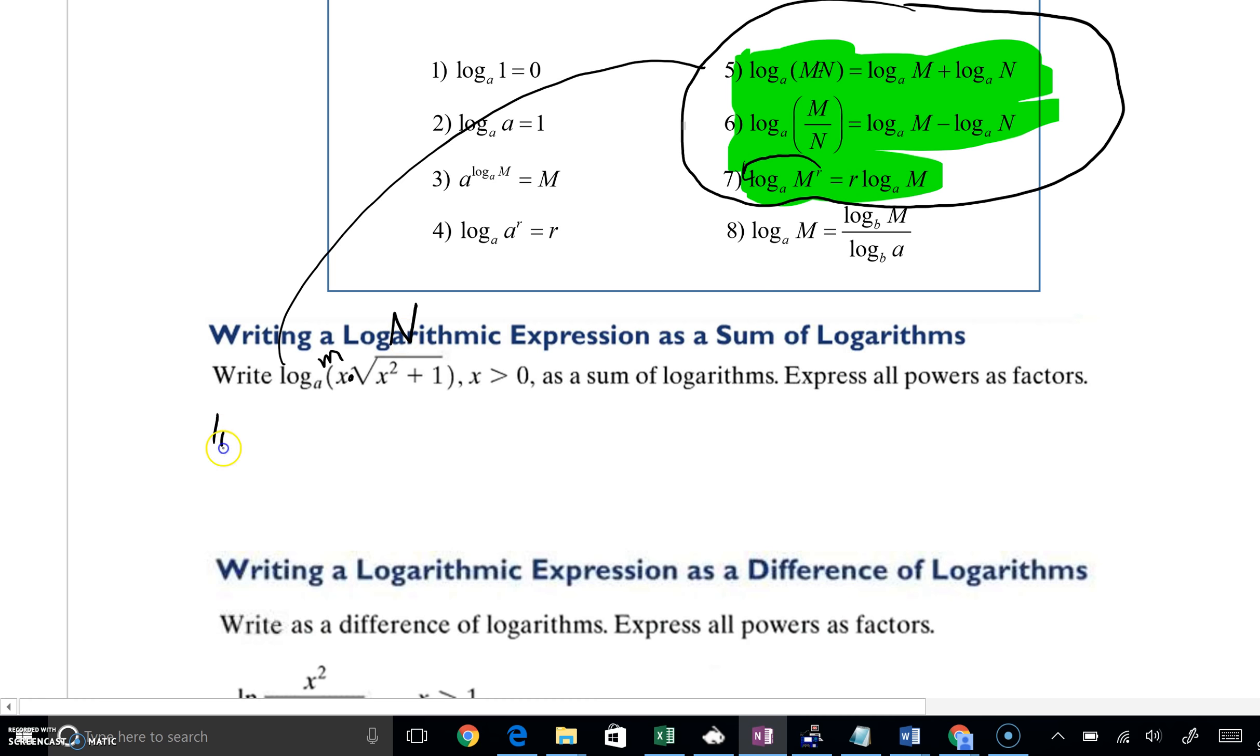So what will happen is this will become log base A following step number 5 up here. Log base A of X plus log base A of, I'm going to combine a couple steps right now. Yes, it's the square root of X squared plus 1. But X squared plus 1 is really being raised to the one-half power. I hope you remember, a square root can always be expressed as a one-half power.